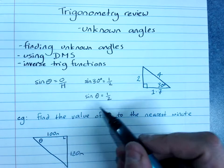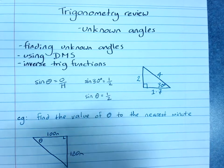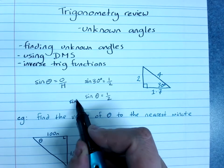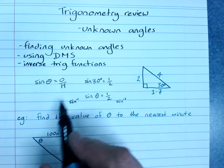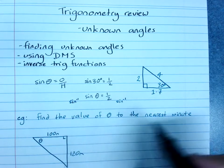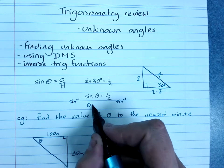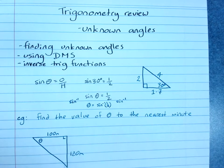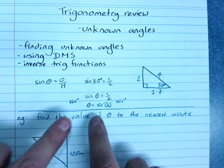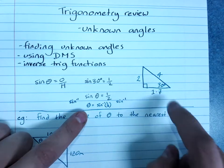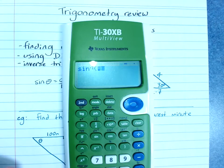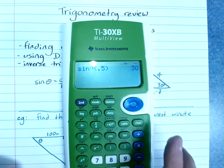When you cancel something out in an equation, you do its opposite, and the opposite of sine is inverse sine. So if I do inverse sine of both sides, I'll get the angle equals inverse sine of a half. Second function sine to get inverse sine of a half is 30 degrees.